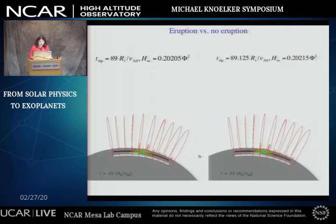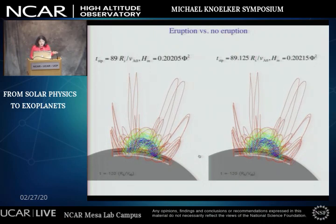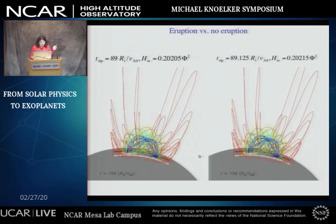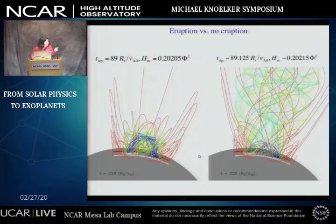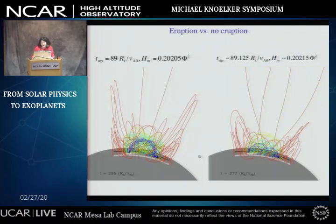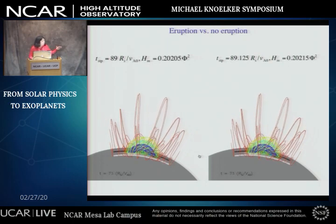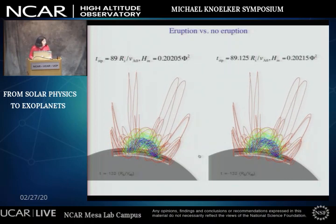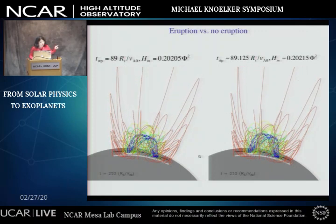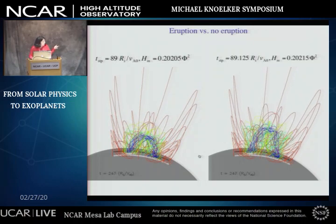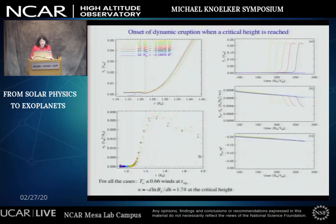Shown here is a comparison of two simulations where flux emergence was imposed slightly longer in the right case, building up the flux rope more than the left. Both settle into a quasi-static rise after emergence stops. The one on the right, which has slightly more twist transported into the corona, reaches a critical height and erupts, while the one on the left doesn't reach the critical height and starts to shrink down quasi-statically due to dissipation of the current by numerical diffusion. There appears to be a critical height which the flux rope must reach to develop dynamic eruption, consistent with the torus instability idea.